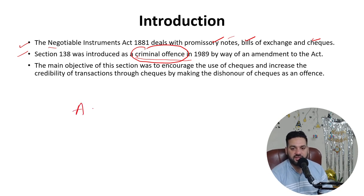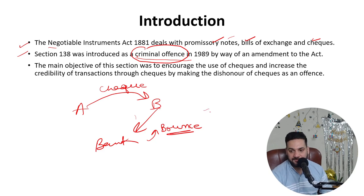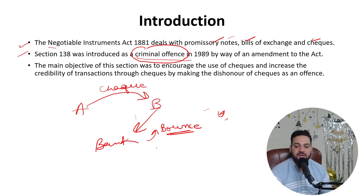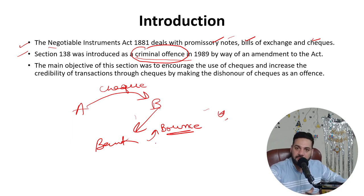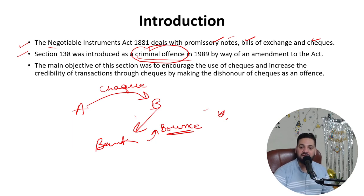When person A gives a check to person B, and person B goes to the bank to encash that check but the check bounces due to insufficient balance — that is a criminal offense under Section 138 of the Negotiable Instruments Act. Two years of imprisonment can result, along with a fine double the amount of the check.